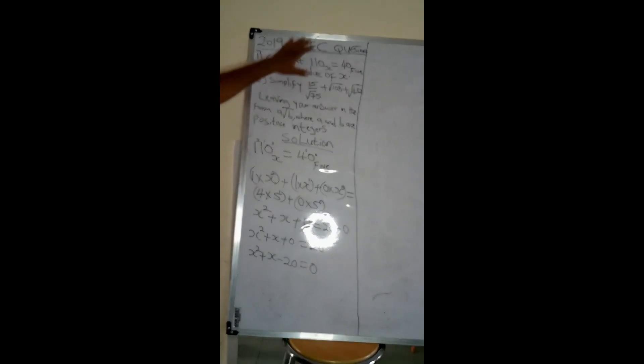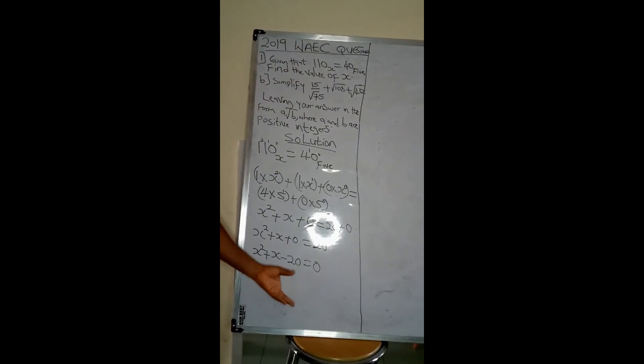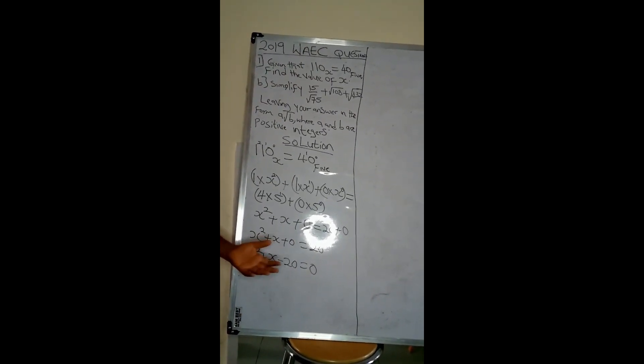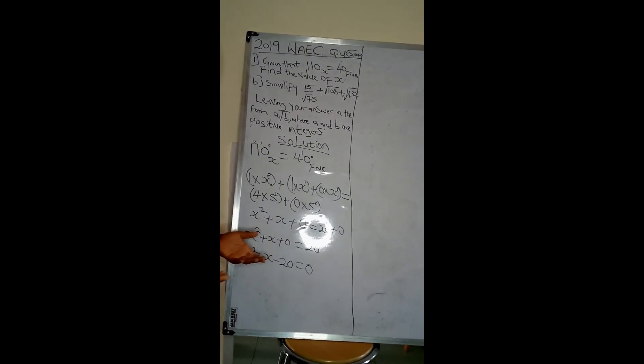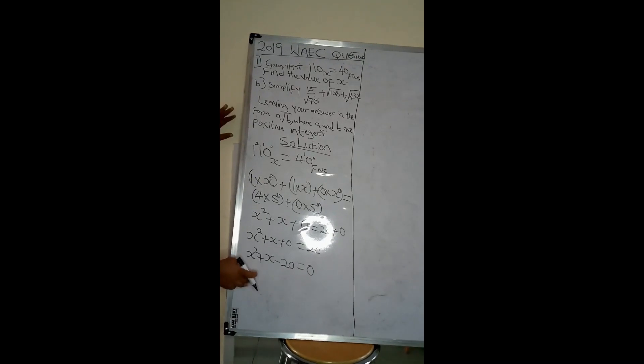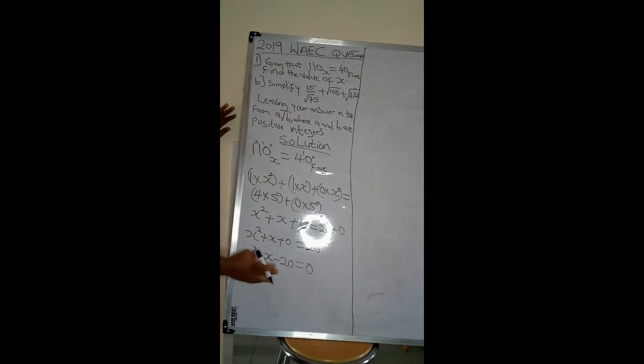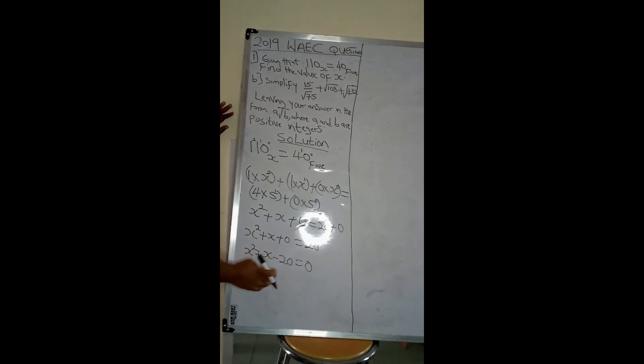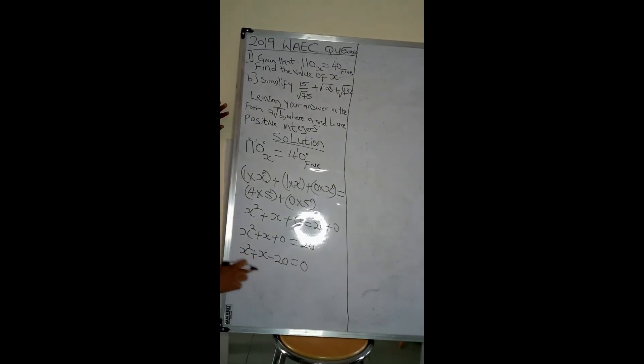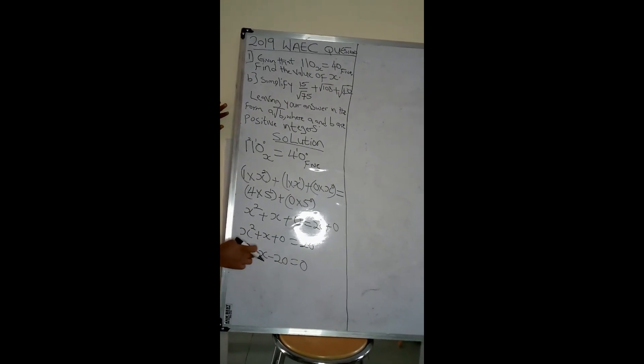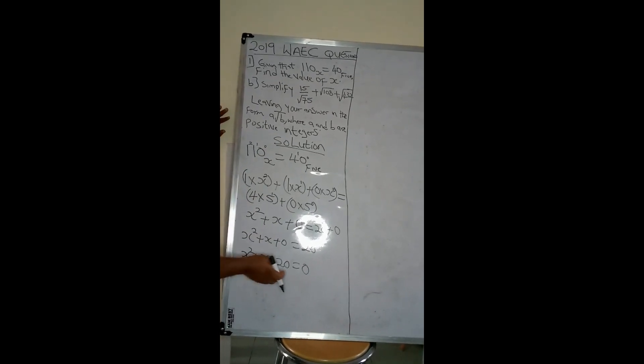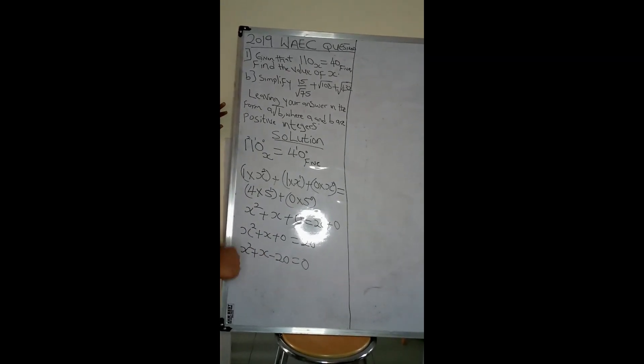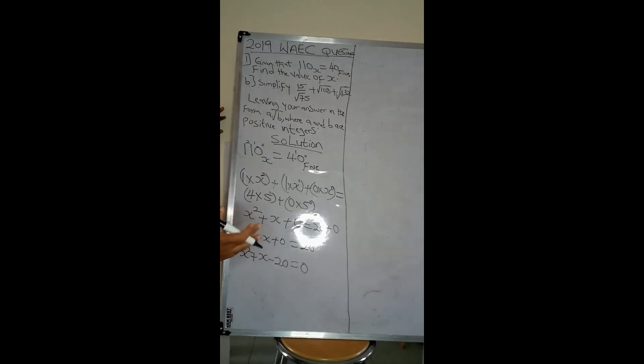We've reduced this question to a quadratic equation. Now you need to solve the quadratic equation. Let's look for two factors of 20 that when multiplied give me minus 20 and when added give me plus 1. The coefficient of this is 1. I have 4 and 5. 4 and 5, if I multiply will give me 20, and if I add or subtract will give me 1.